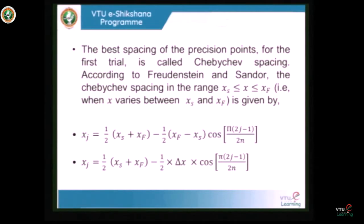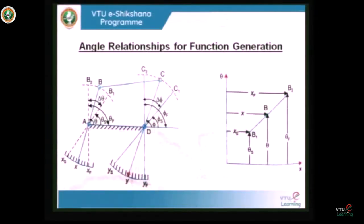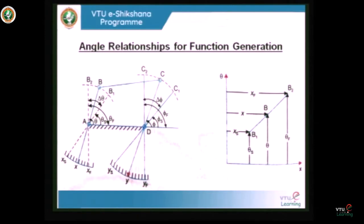Usually we solve problems for three precision points. To correlate the angles — crank angle and output angle — with reference to displacements, we can assume a linear relationship between input and output. For a 4-bar mechanism ABCD, we have the initial crank position as θ_s and final crank position as θ_f. Similarly, for the output link the initial rocker position is φ_s and final is φ_f. We want to generate a function simulating any position between θ_s and θ_f, assuming a linear relationship between displacement and angular displacement.